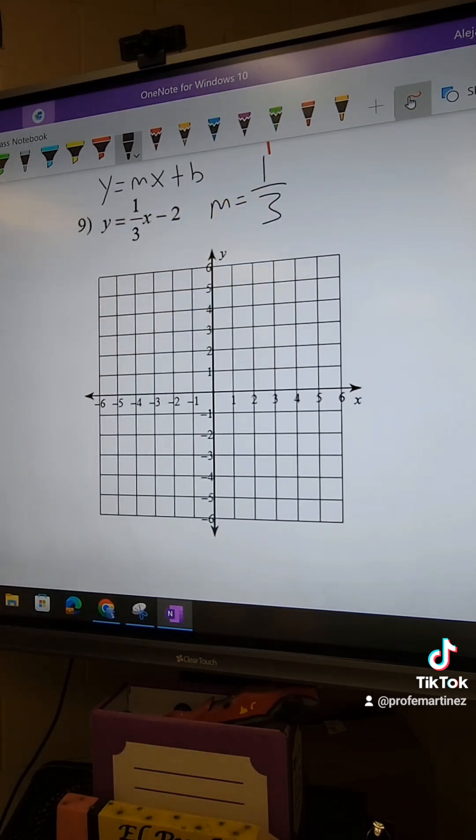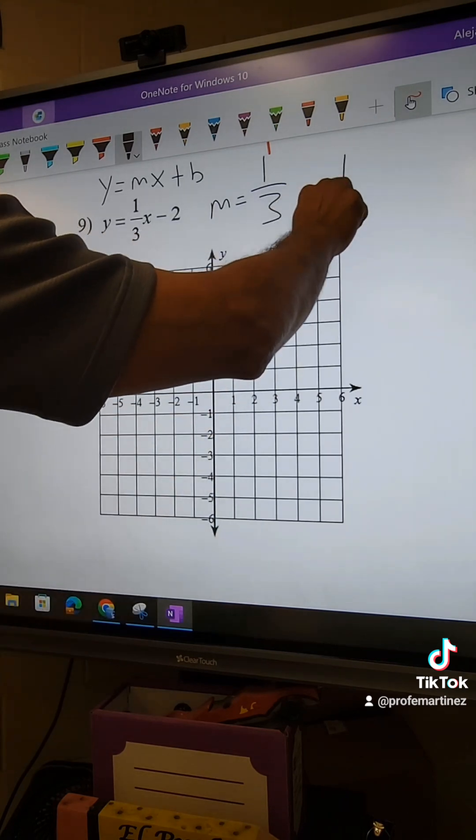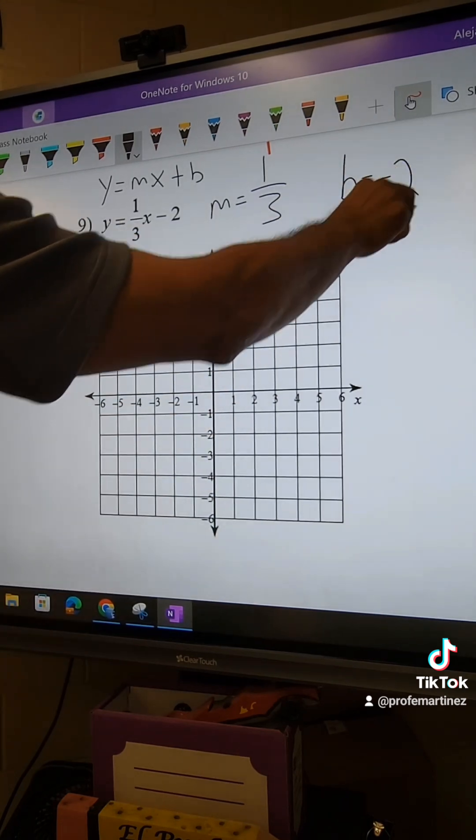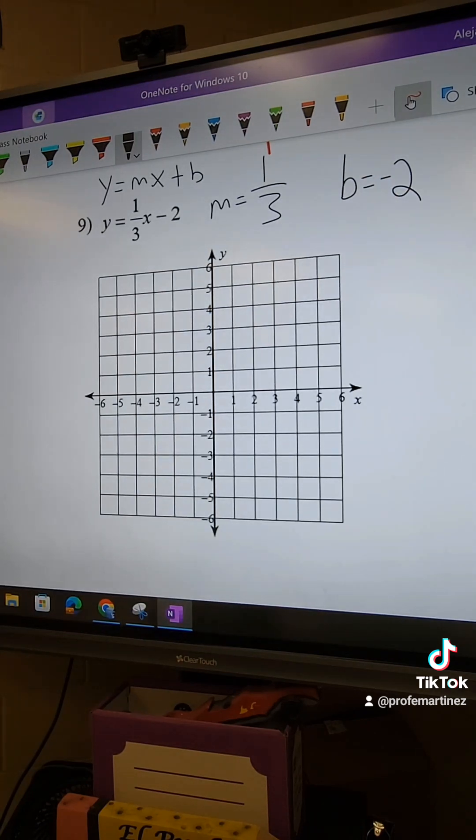Your b, or your y-intercept, is negative 2. Okay, it's the number to the far end. Sometimes it's called the y-intercept, but I'll just put b this time. Okay, we put the point, start with this one here, negative 2.